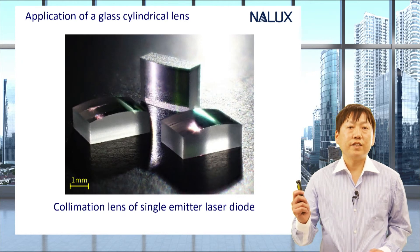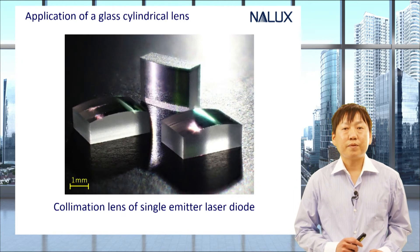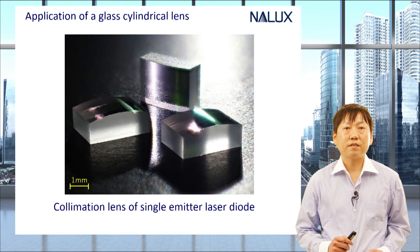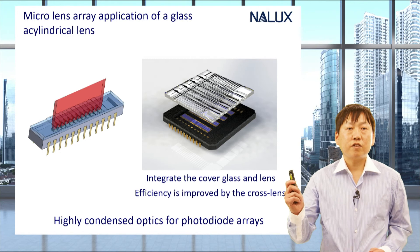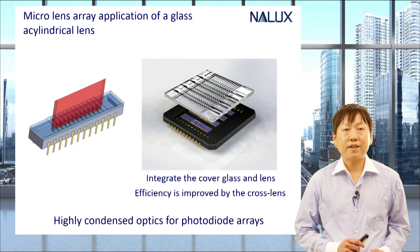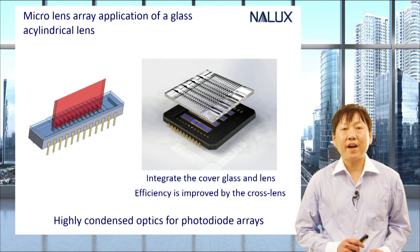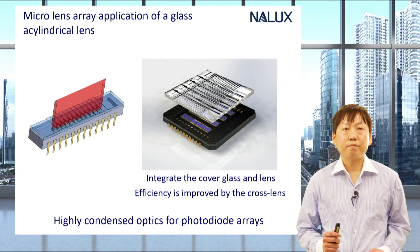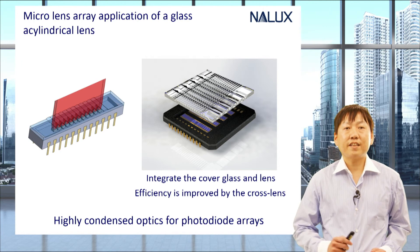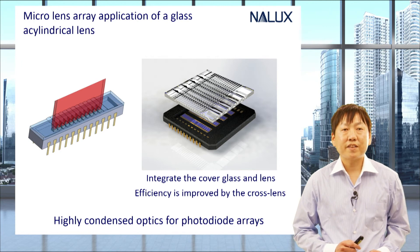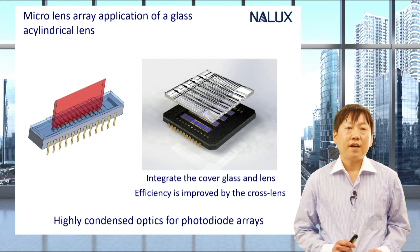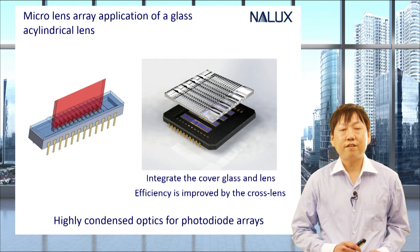This lens is used as a slow-axis collimating optical system for single-emitter high-power lasers. This is an application of an acylindrical micro lens array — high-condensed optics for photo diode arrays for LiDAR sensors. This double-sided crossing structure dramatically improves the efficiency of the detector. Additionally, it is also possible to integrate the cover glass and the lens.